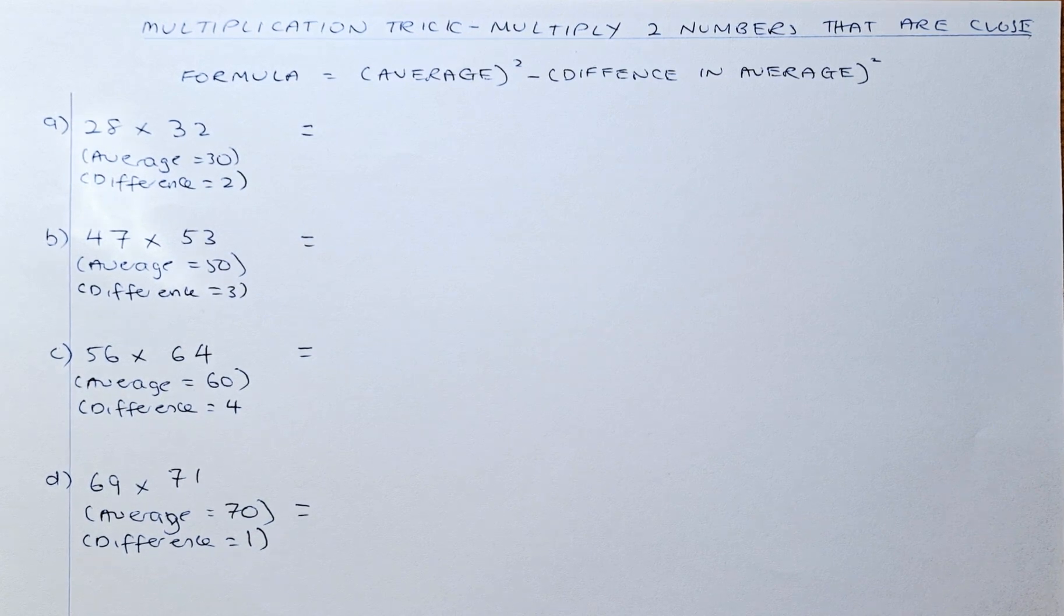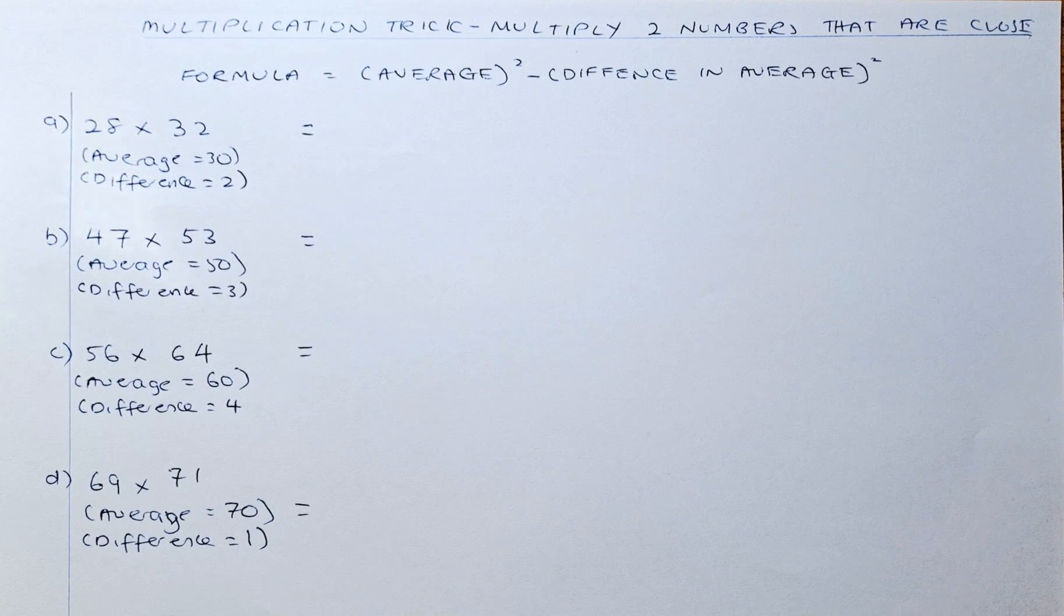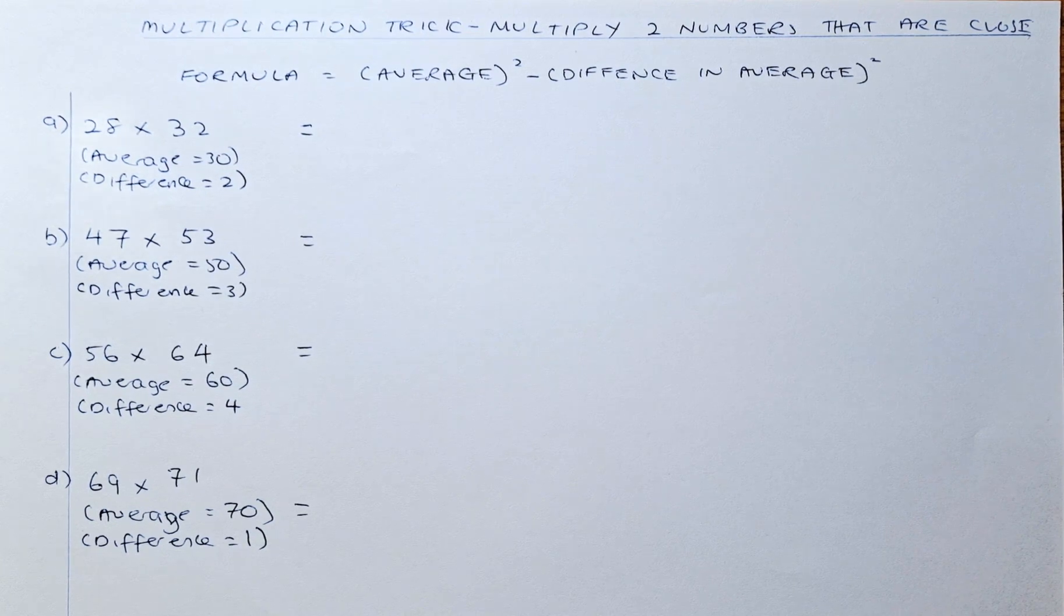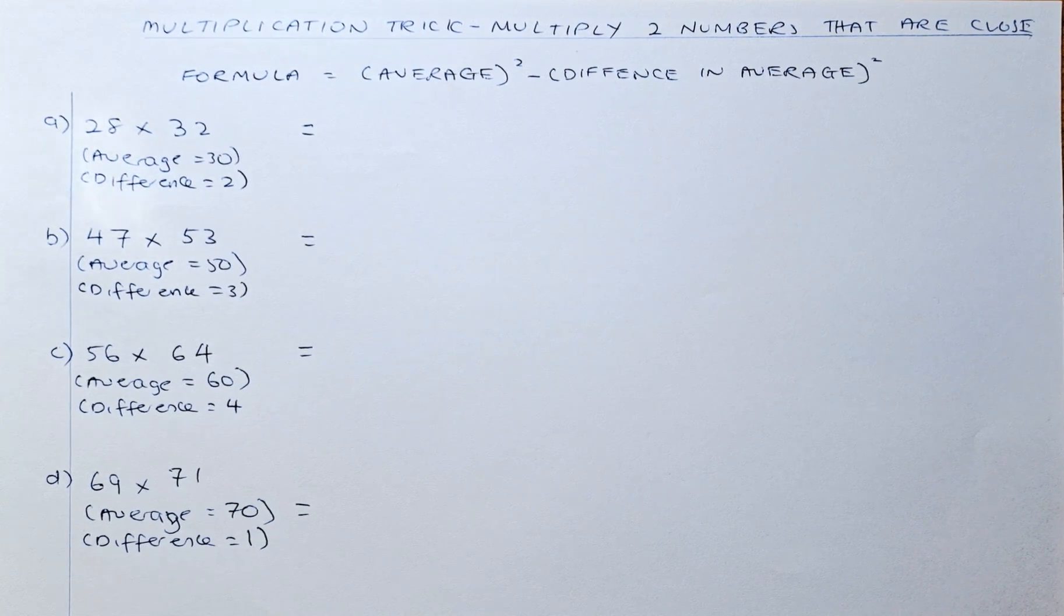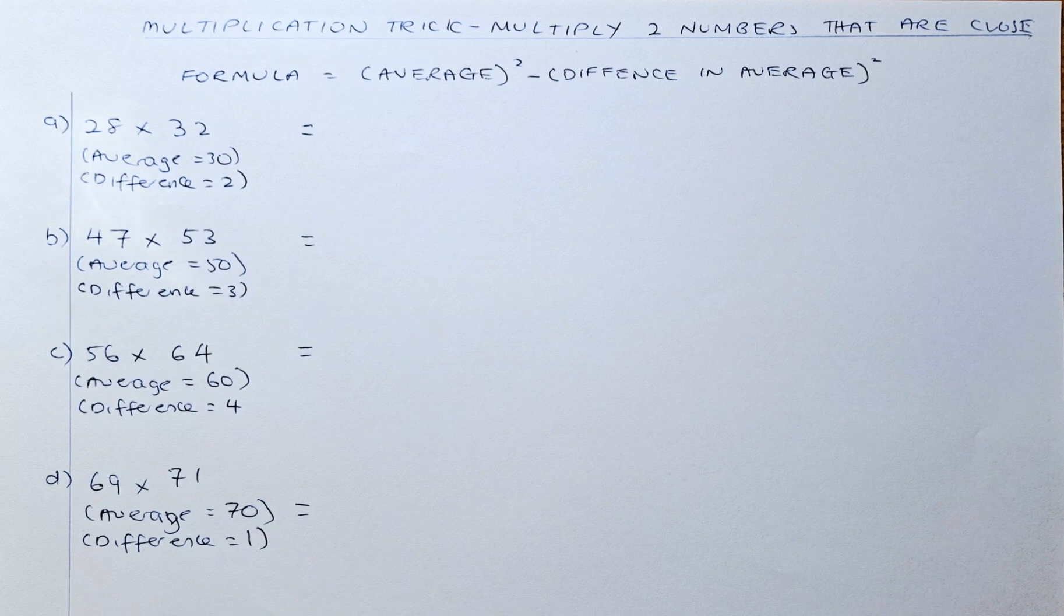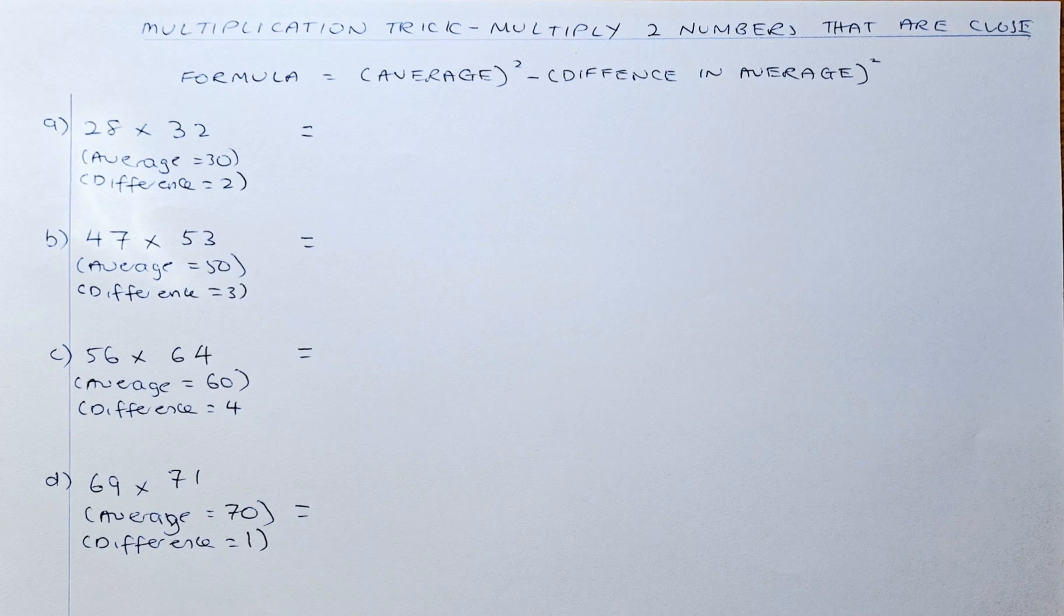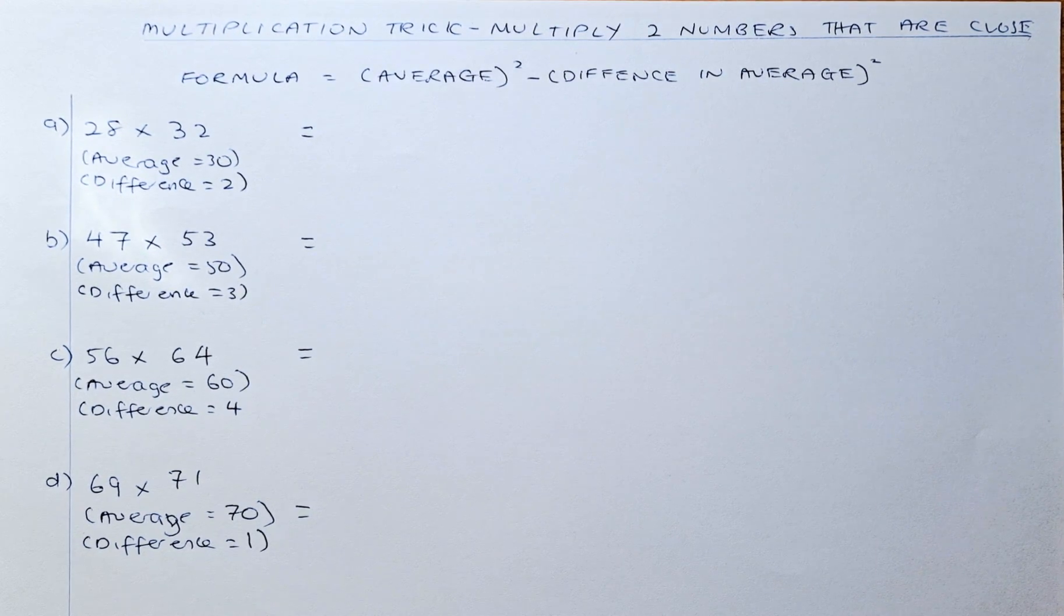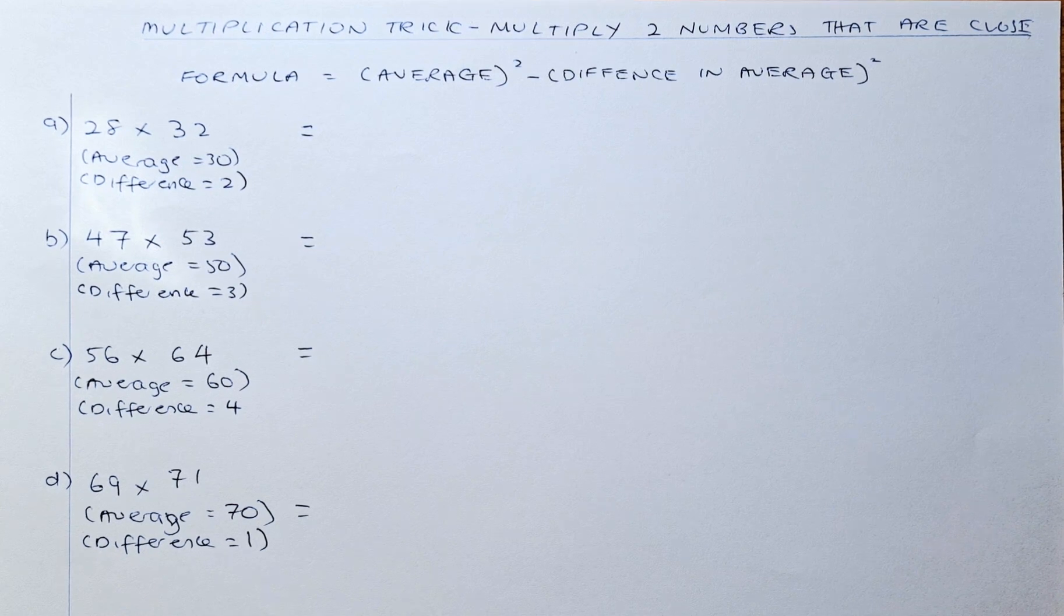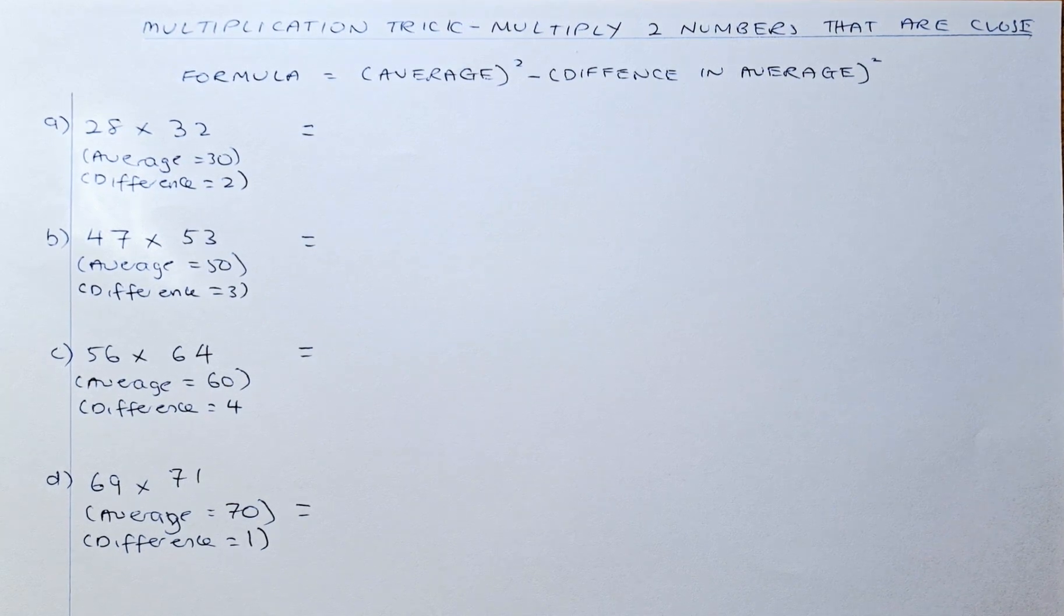if we have 28 times 32, the average is 30 because 28 plus 32 divided by 2 gives you 30. For 47 times 53, the average is 50. Similarly, for 56 and 64, the average is 60, and for 69 and 71, the average is 70. So without further ado,